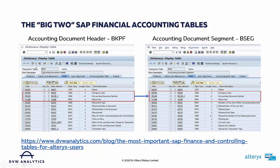I've taken a snapshot from the data dictionary of both tables within the SAP system, and we can see that there are three fields common to both tables: company code, accounting document number, and fiscal year. This means I'll be able to use those three fields to search for data within the BSEG table. There's a tight link between these two tables through these three common fields.